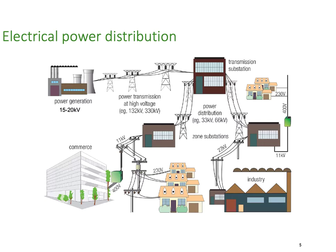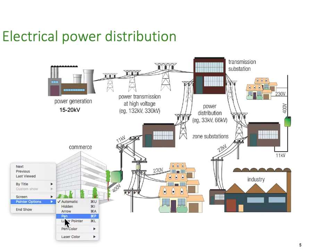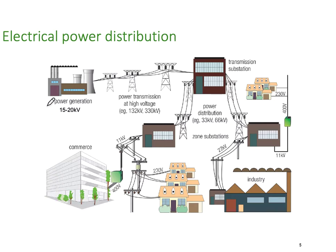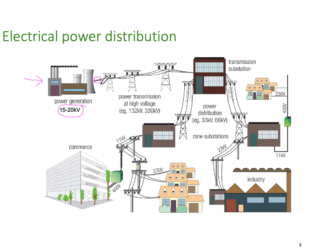Let's have a close look at the electric power distribution diagram. We're going to start over here with generators. Generators could be coal-fired steam generators, solar, hydro, or wind — there are lots of ways to generate electricity. Typically, those generating plants generate at about 15,000 to 20,000 volts. Then as they come out of the generation plant, they have a step-up transformer, and we typically step it up to 132 kV or quite often 330 kV.